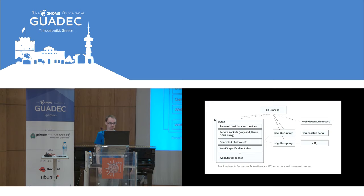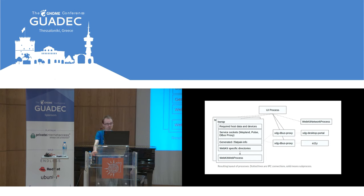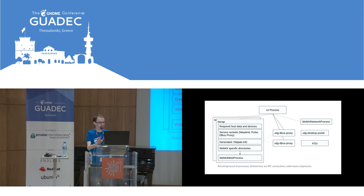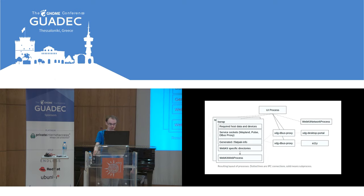Here's the end overview: the UI process launches two D-Bus proxies. One is for the user session address, which connects to the desktop portal. Accessibility has its own private D-Bus connection, so we have to have a second proxy just for that. The web process is a bubblewrap process that mounts the required host data, the required host services, generated Flatpak info, a few directories specific to WebKit, and then finally executes the web process.